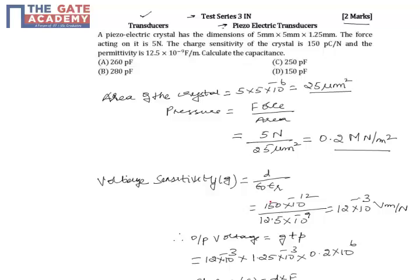To calculate the capacitance, we need to know the charge of the crystal and the applied voltage, using Q = CV. We are given the charge sensitivity and need to compute the voltage supplied across the crystal. We also need to compute the generated output voltage using the applied pressure and the charge. We know that pressure equals force per unit area.